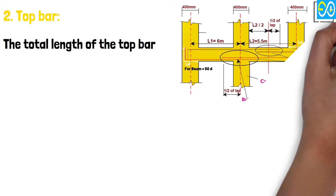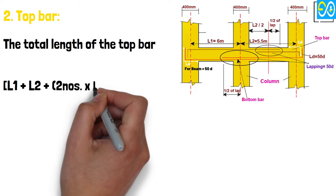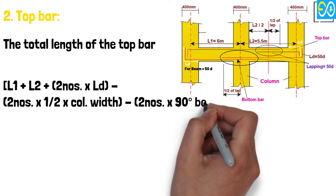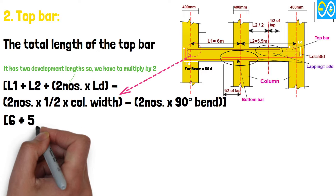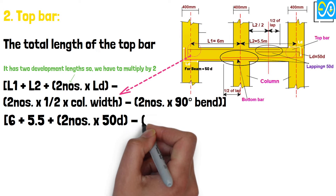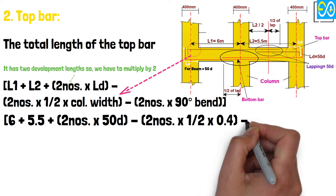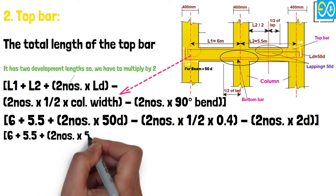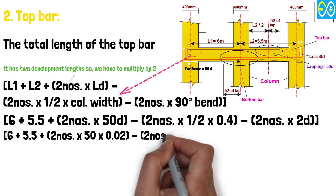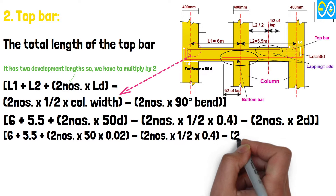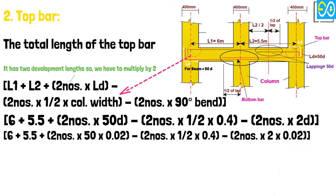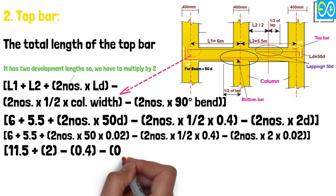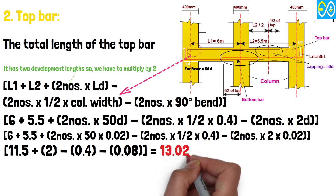Top bar: The total length of the top bar equals L1 plus L2 plus 2 times Ld minus 2 times 1.5 times column width minus 2 times 90-degree bend. Equals 6 plus 5.5 plus 2 times 50 times 0.02 minus 2 times 1.5 times 0.4 minus 2 times 2 times 0.02. Equals 11.5 plus 2.0 minus 0.4 minus 0.08, equals 13.02 meters, which is greater than 12 meters.